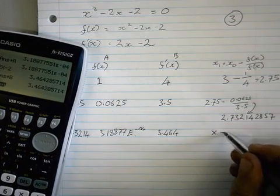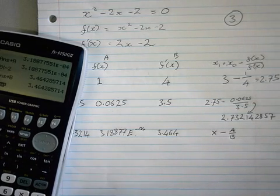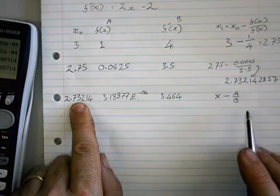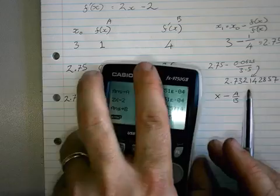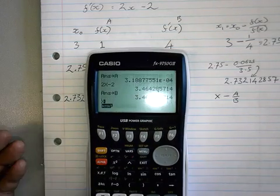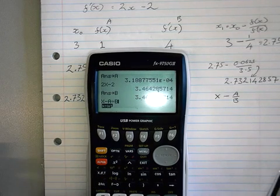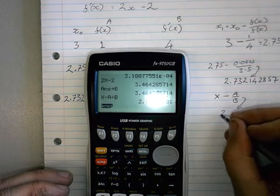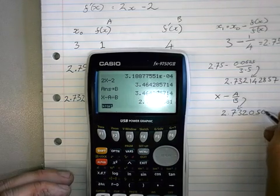So what's this one going to be? x minus A over B. If you think about it what am I doing? I'm going to do that number take away that one divided by that one. So having used the calculator really well, I can actually do this. Watch. Do x take away A divided by B.